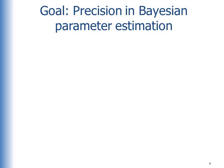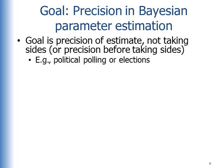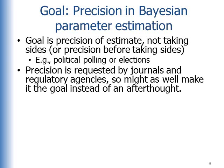So this suggests our goal could be precision in Bayesian parameter estimation. Here the goal is precision of the estimate—it's not taking sides, or at least we want to achieve precision before taking sides. For example, this is done in political polling or elections all the time. We don't sample people, sample votes until we can reject one candidate being better than the other—people would get pretty upset about that. Instead, you want to collect as much data as you can to achieve a precise estimate. Precision is requested by journals and regulatory agencies, so we might as well make it the goal instead of an afterthought.